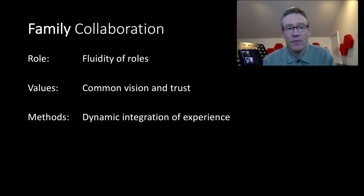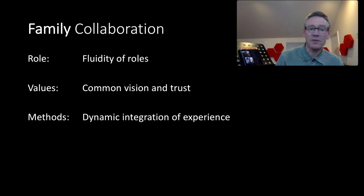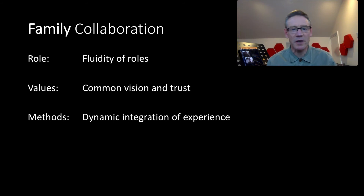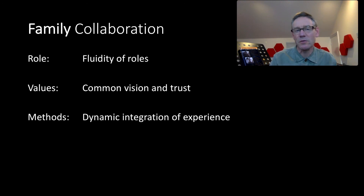Family collaboration is where things start to get more fluid. The roles are fluid and can cross over — it's not as fixed as complementary. People will start to move and take on different aspects of the collaboration. In terms of values, there's a common vision everyone is working towards, but there's also trust — particularly as people move across disciplines in how they contribute. There may be a sense of territories in complementarity, but in family mode people move across those territories and that's fine; everybody trusts each other to do that. So it's becoming more integrated, and hence the method is a dynamic integration of experience — that fluidity as people move across roles that would be quite separate in a complementary fashion.